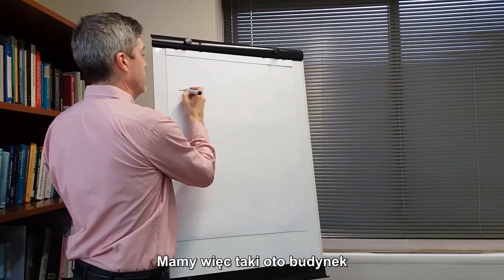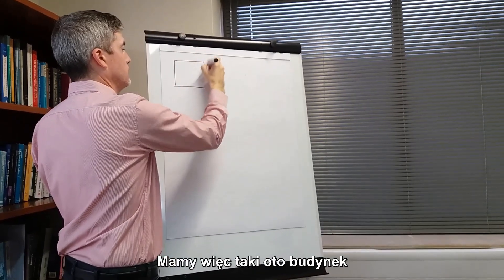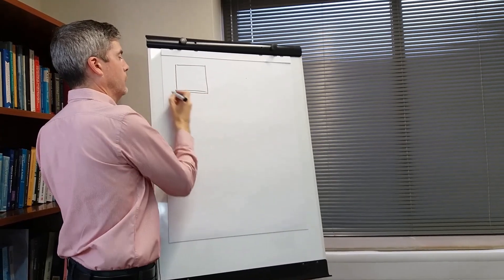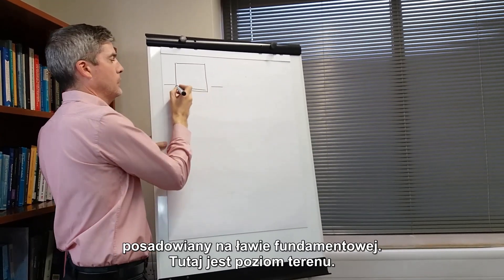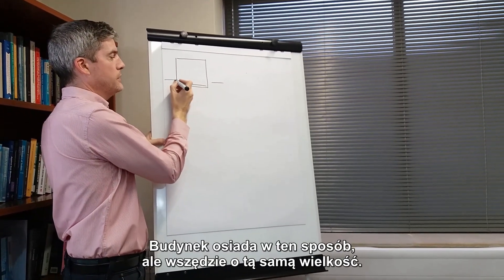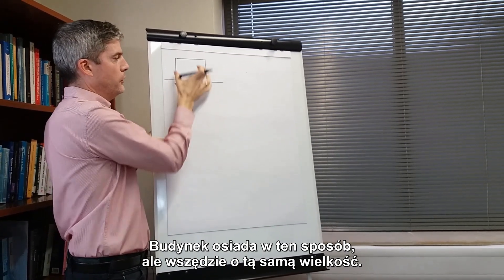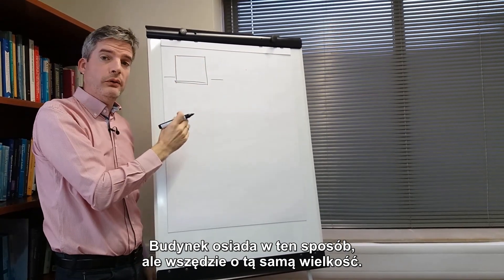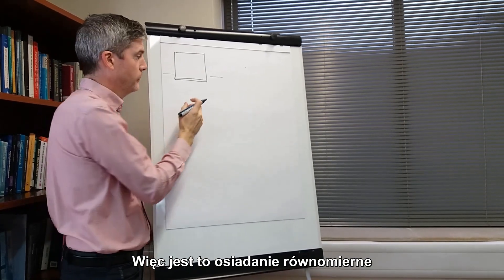So we have a building on a spread foundation — there's the ground level. It has settled, but all by the same amount. So that is uniform settlement.